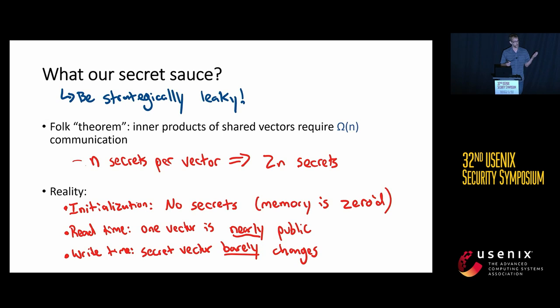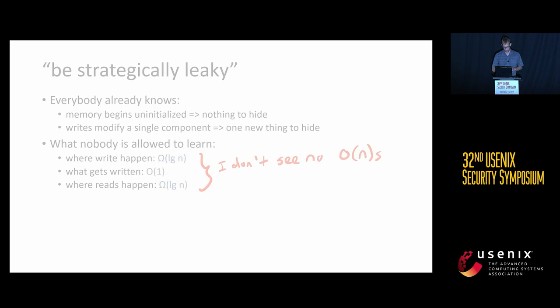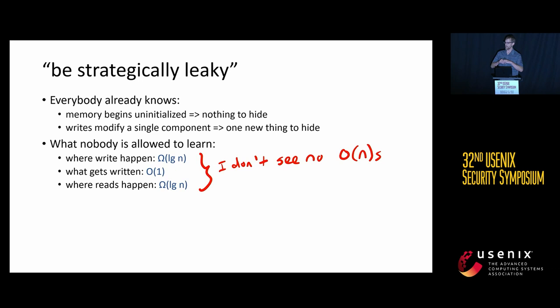When it's time to write, one of the two vectors has changed in one location but is otherwise the same — so again, not much needs protecting. At no point do we ever have n fresh secrets that we need to hide. Since everybody knows the database at the beginning, initialization is literally just allocate some memory, zero it, and you're done. We protect precisely what needs to be protected: when a write happens, we protect where the write happens — log n bits — and what gets written — O(1) since each memory location holds a fixed-size word. When a read happens, we hide log n bits from the servers.